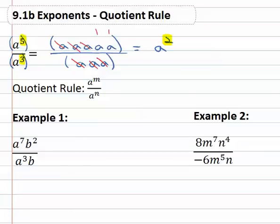This is the quotient rule of exponents, where if we've got the same base over division, we simply subtract the exponents, m minus n.